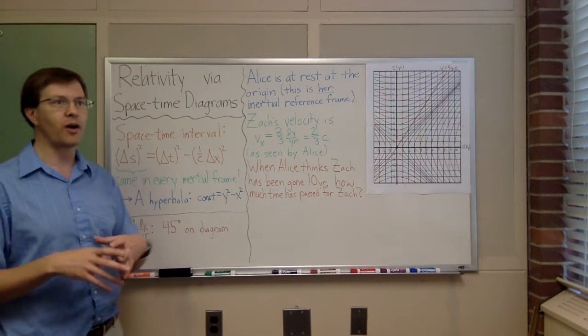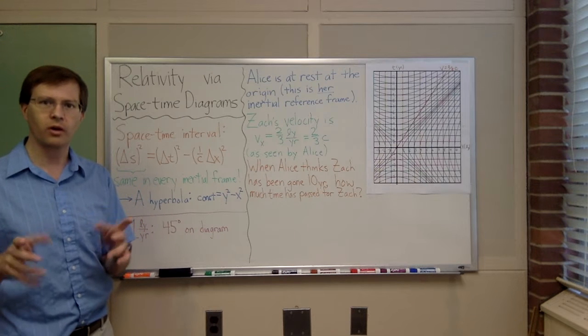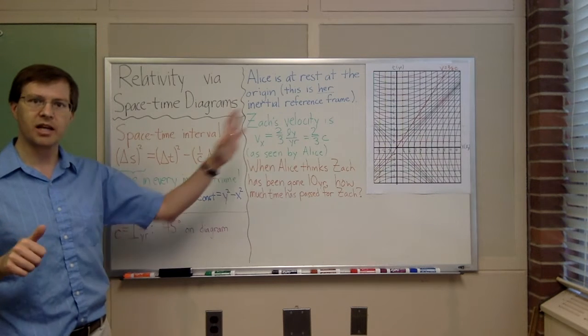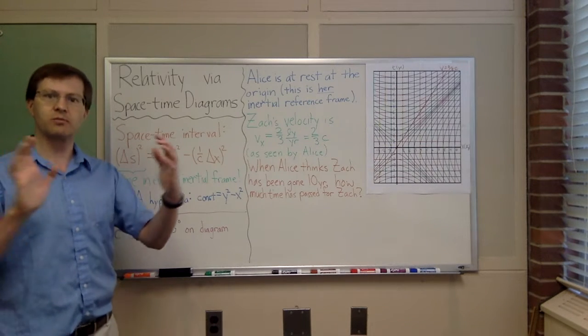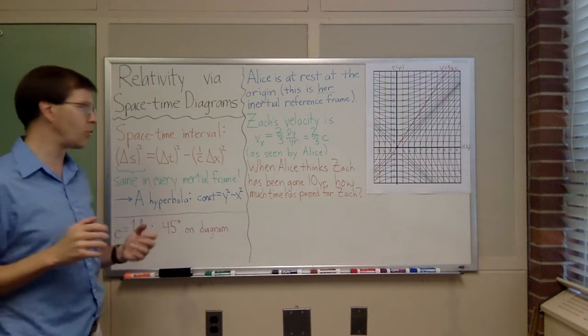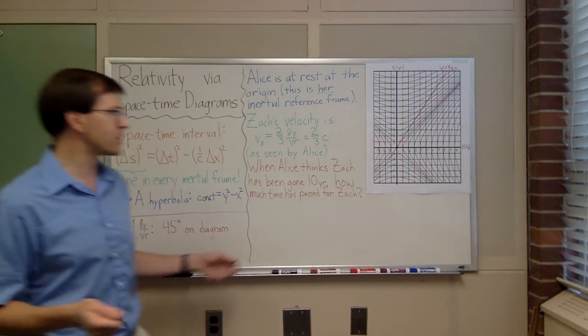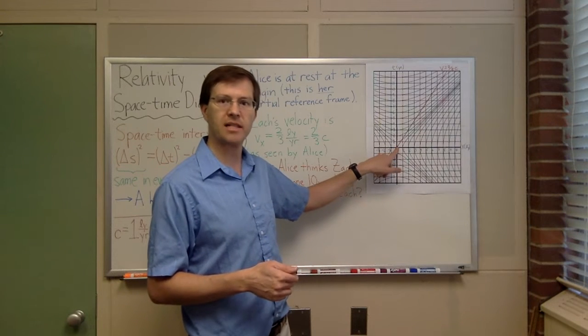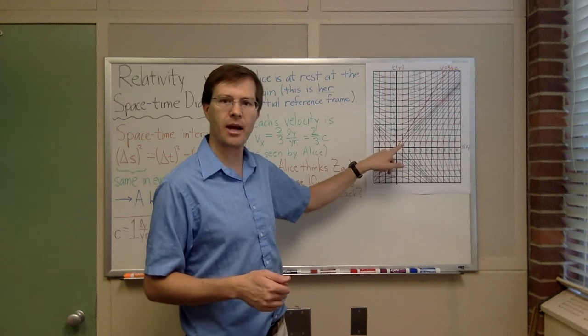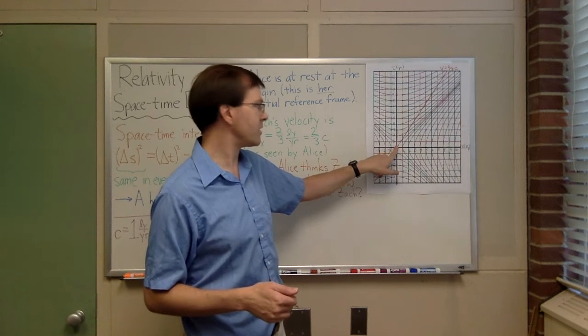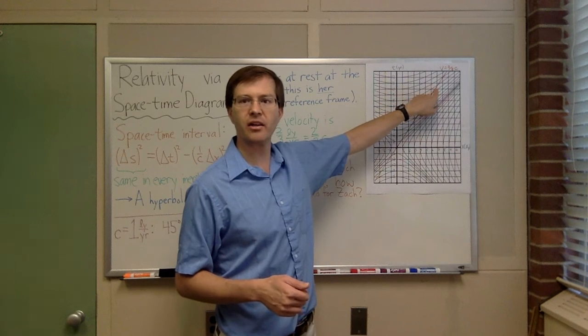If you have an inertial reference frame, a bunch of clocks, synchronized clocks moving together, all at rest relative to one another, and you have two events, an initial event and a final event. Let's say, for example, the event where Zach passes Alice. That's an event. It has a specific time and a specific position. An event is always a point on a spacetime diagram. And let's say we have a final event, the event where Alice believes that Zach has been traveling for 10 years.